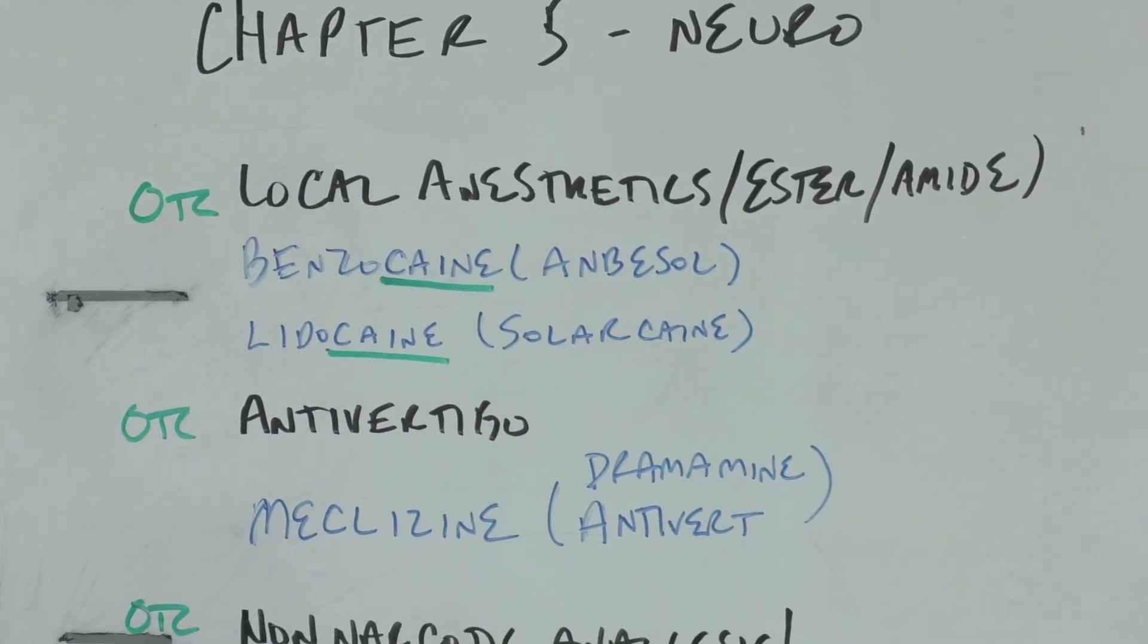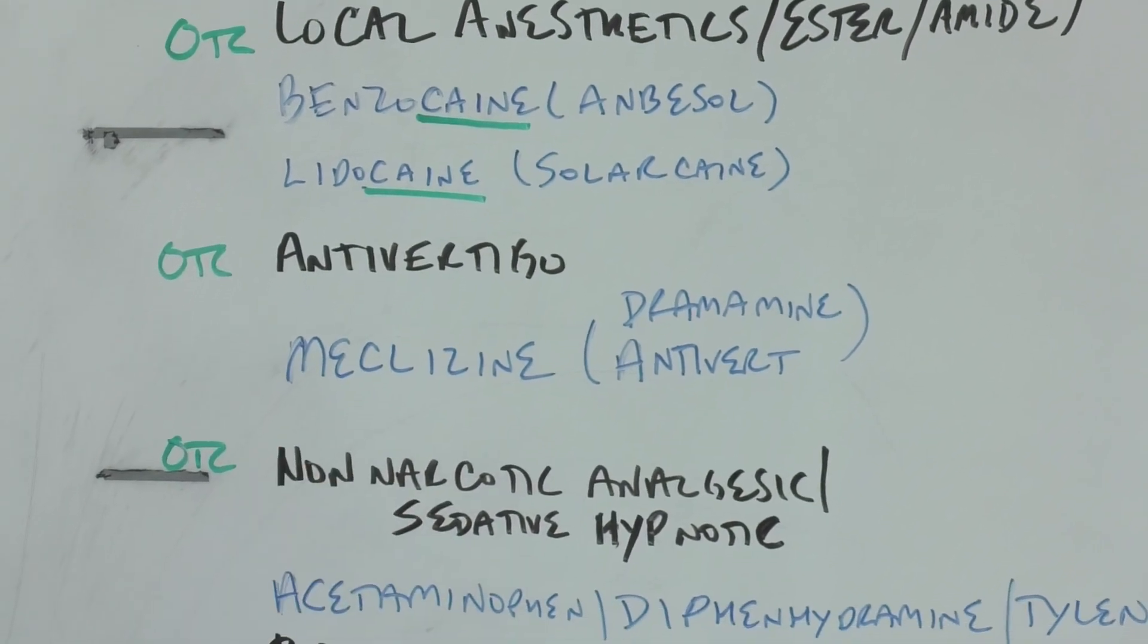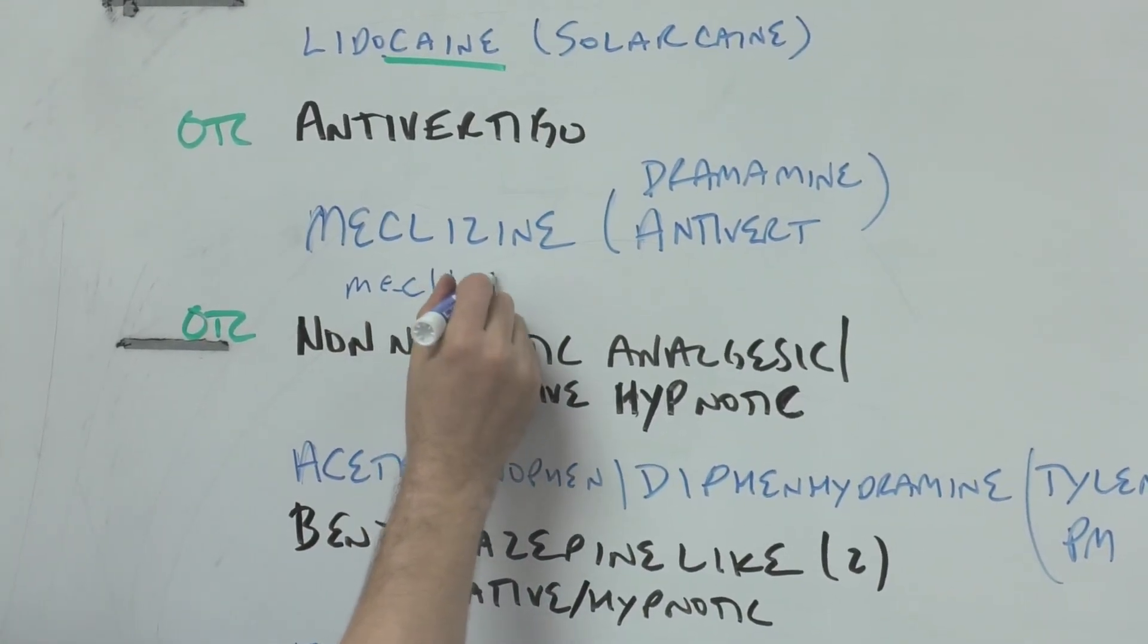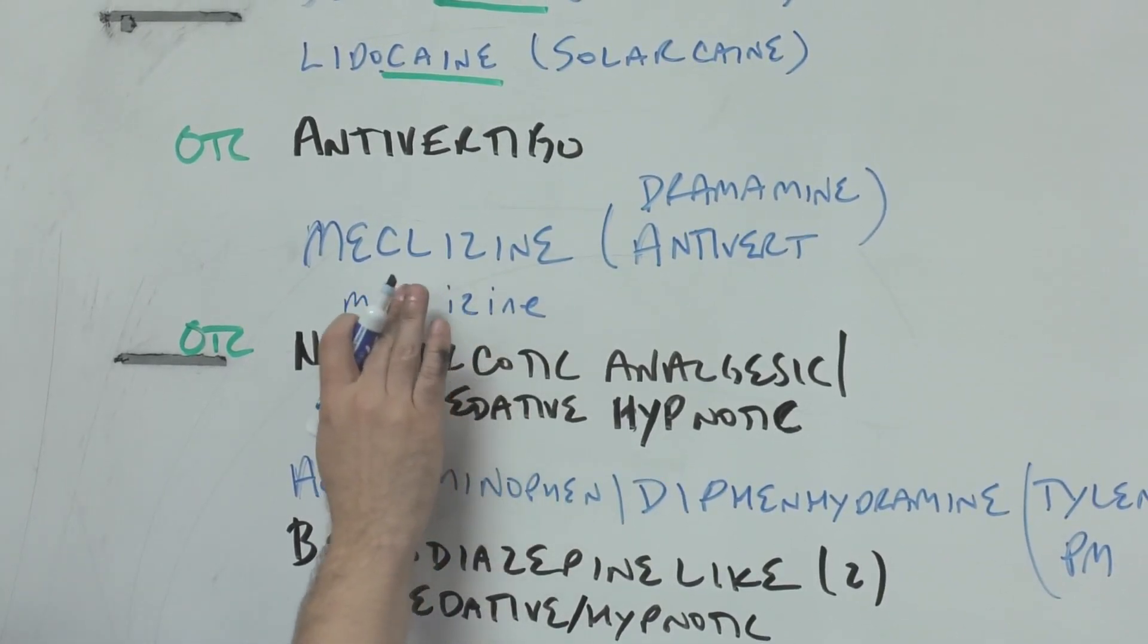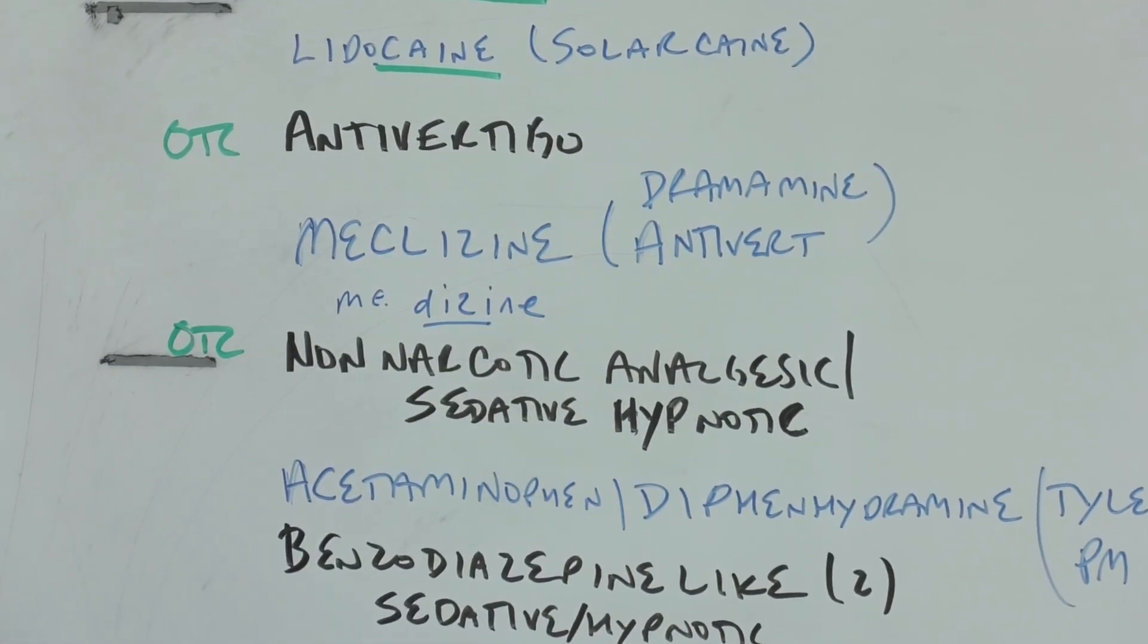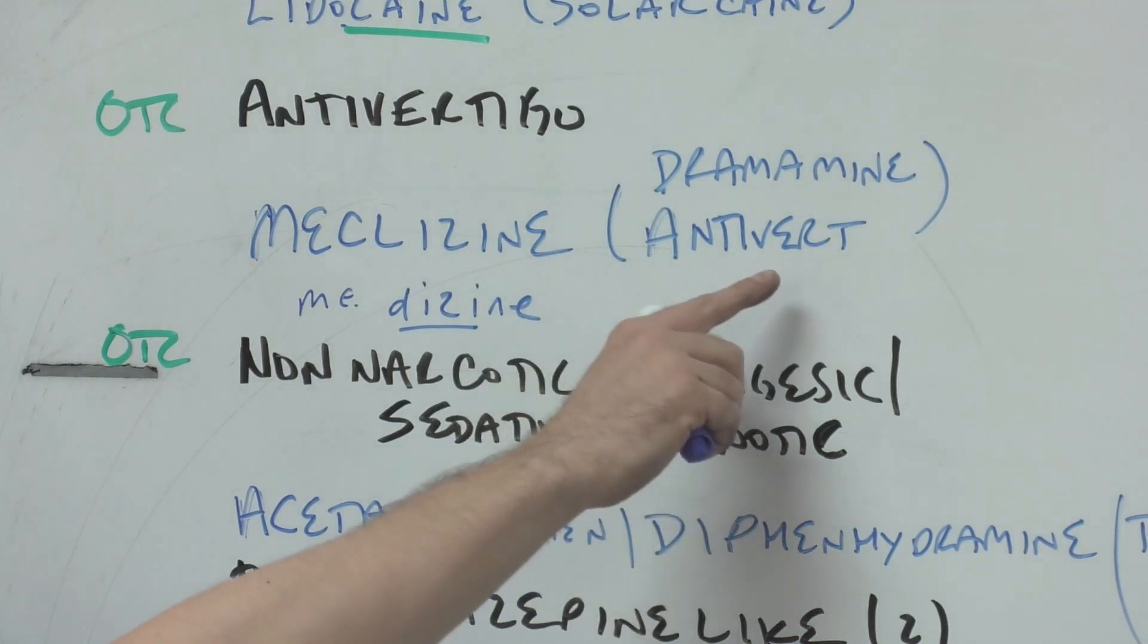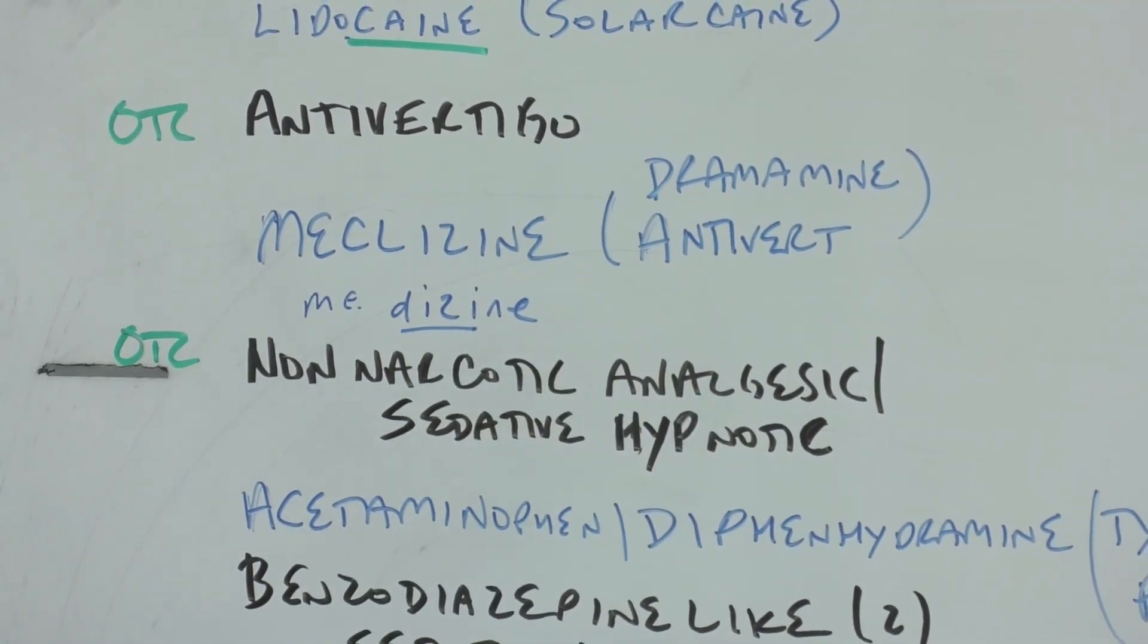OTC antivertigo: meclizine. If I were to do meclizine in small letters like this M-E-C-L-I-Z-I-N-E, you could kind of put this C and this L together to make a D and then you see dizzy, so it's for dizziness. The brand name is Dramamine, but there was also a prescription brand name Antivert for anti-vertigo.